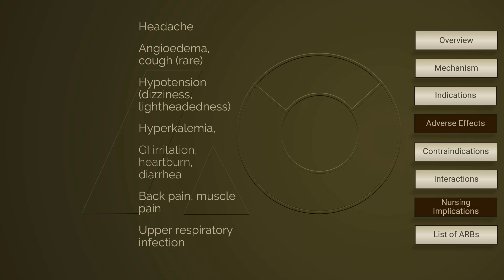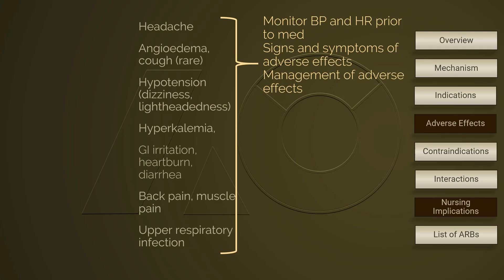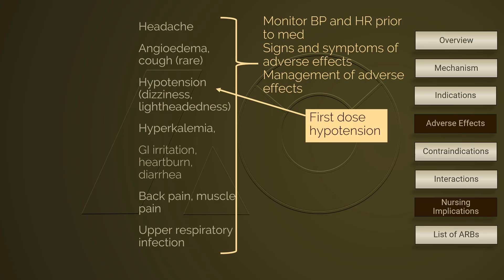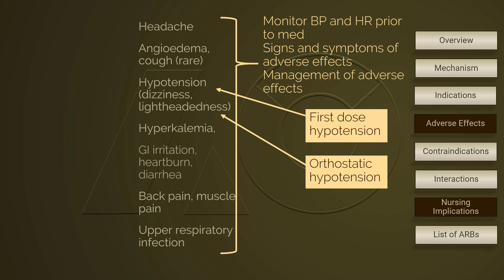Patient education is always vital for those who take medications for chronic conditions at home. The first adverse effect of ARBs is changing blood pressure, so monitoring blood pressure and heart rate becomes essential. Patient education should include signs, symptoms, and management of adverse effects. Hypotension is a common adverse effect, especially first-dose hypotension. Explain to patients that this adverse effect usually disappears after a few days into therapy. To help prevent orthostatic hypotension, change position slowly from lying to sitting, then remain sitting for 2-3 minutes or until lightheadedness subsides before standing up. Patients should also slowly change position from sitting to standing.